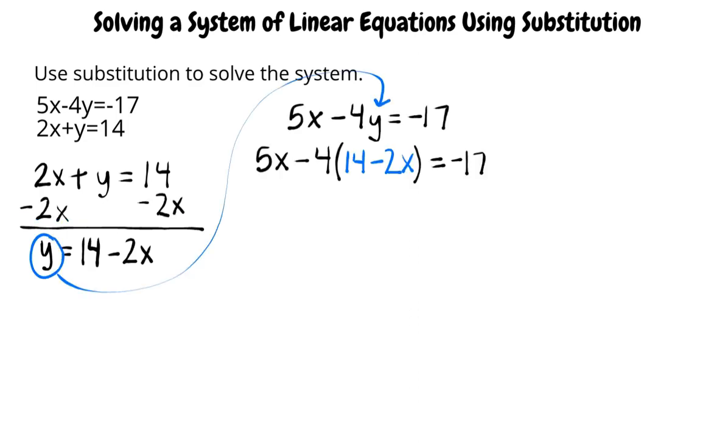Doing this substitution, we get 5x minus 4 times (14 minus 2x) equals negative 17. Now that we only have one variable in this equation, we can solve the equation for x.